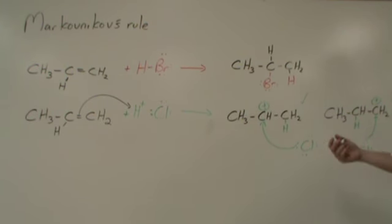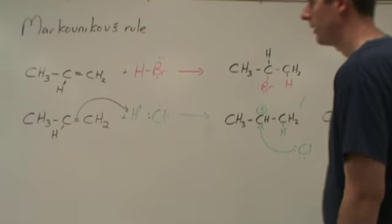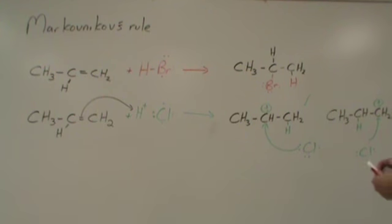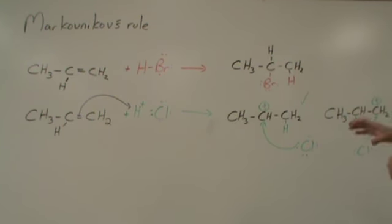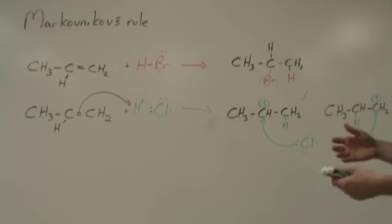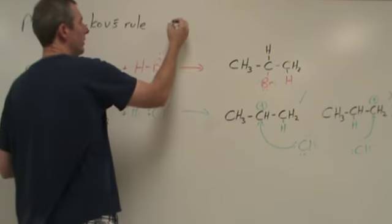Because of the fact that the H+ forms the bond with the double bond, with the pi bond and the alkene first, that dictates how we're going to end up with our products. And so if we were to create another asymmetrical alkene...